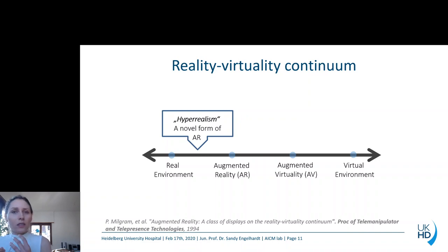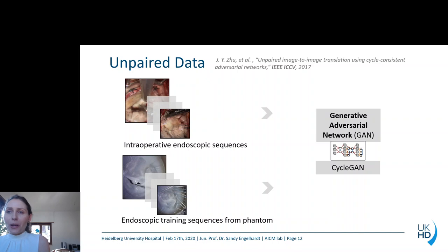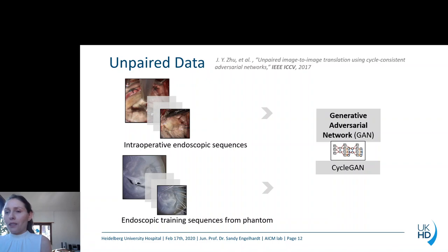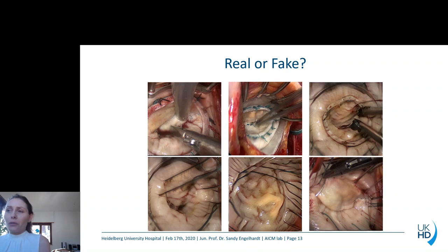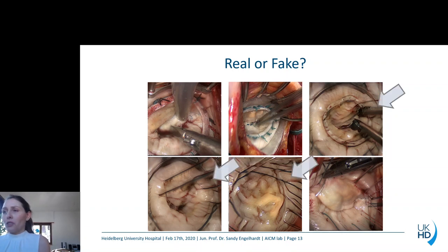There are still parts of the image which should not be transformed, such as the instruments, the sutures, the needles, and the prosthesis. To train such networks, we rely on the CycleGAN approach, proposed by Zhu et al. and published at ICCV 2017. We use intraoperative endoscopic sequences and endoscopic training sequences from our phantoms, and we feed these into a Generative Adversarial Network. Doing that, we already obtain quite nice results — it is quite difficult to identify the fake examples in this scenario. These are the fake examples; all the other images are real images.